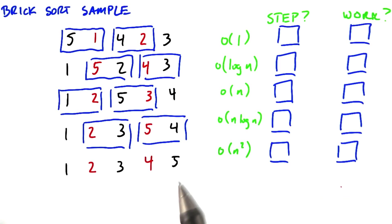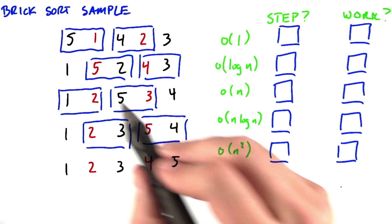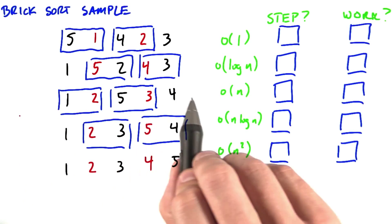We'll look at step complexity first. The worst case is that an element has to move all the way from one side of the array to the other side of the array.